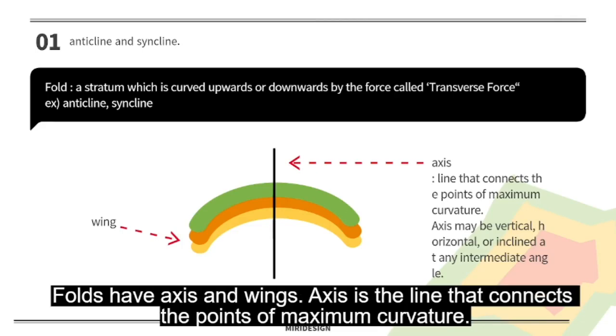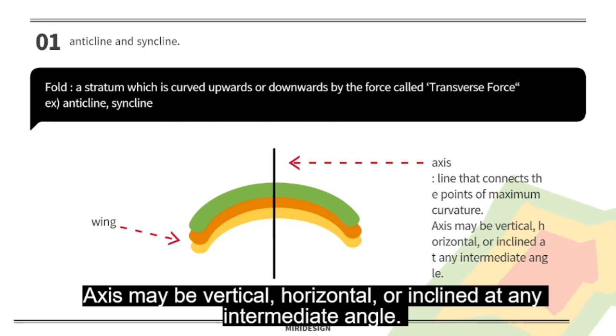Folds have axes and wings. Axis is a line that connects the points of maximum curvature. Axes may be vertical, horizontal, or inclined at any intermediate angle.